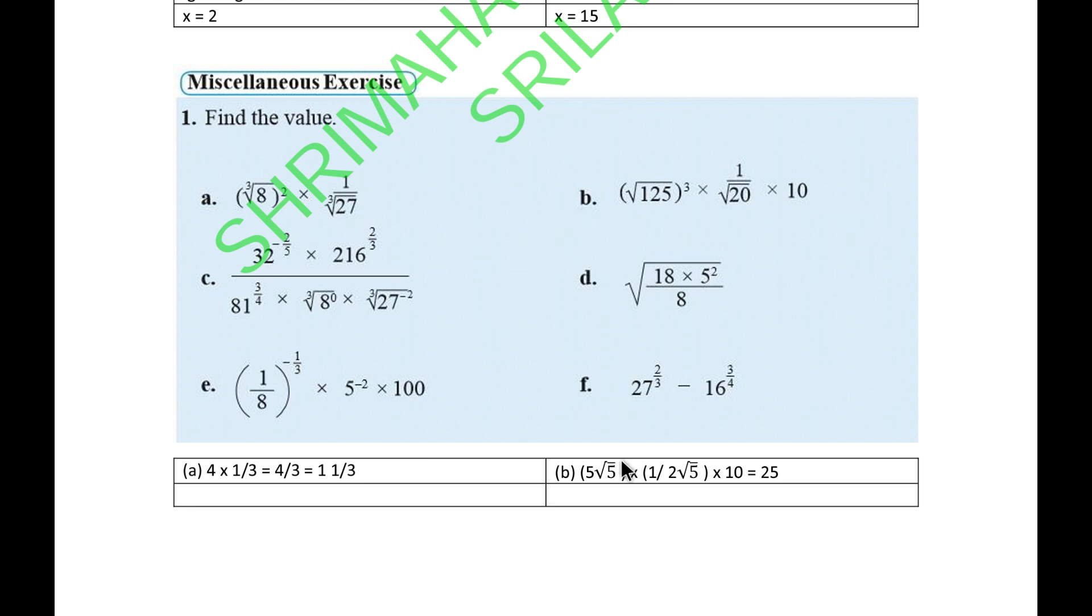The B part, here I made a small mistake. I forgot to put this power 3. So here it's square root 125 to the power 3 multiply 1 over root 20 times 10. Square root of 125 is 5 root 5. 5 root 5 to the power 3 means 5 into 5 into 5 is 125, and root 5 into root 5 into root 5 is 5 root 5. Then you multiply 1 over 2 root 5, multiply 10. Root 5 and root 5 cancel, 2 and 10 cancel, you get 25 times 125. The answer should be 3125.